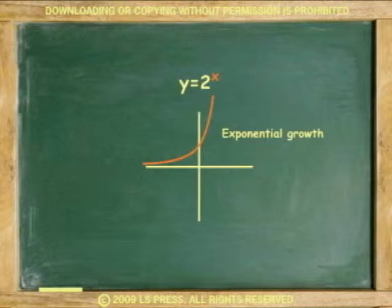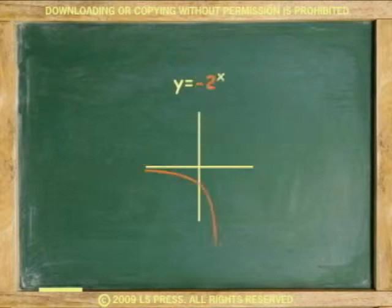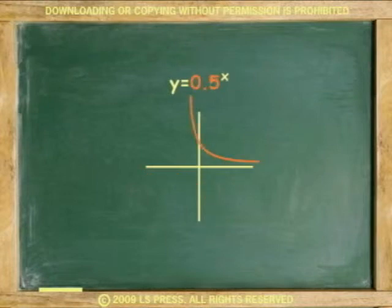This particular equation is y equals 2 to the x. Exponential curves have variations. If the coefficient is negative, a curve such as y equals negative 2 to the x will send the curve the opposite way, towards the negative side. And a decimal base such as y equals 0.5 to the x will make the curve decrease or drop rapidly. This type of curve is referred to as exponential decay.